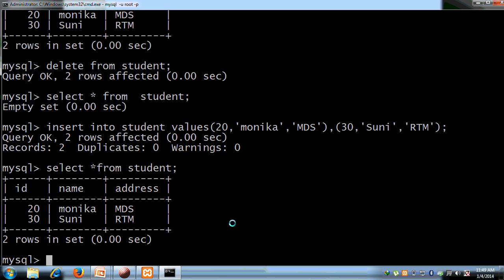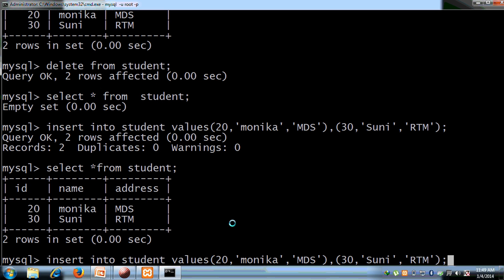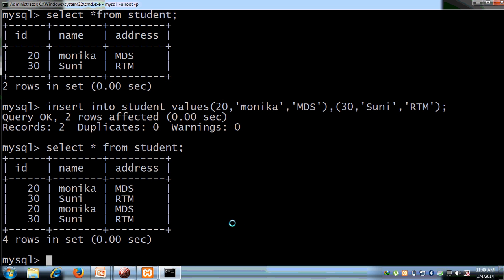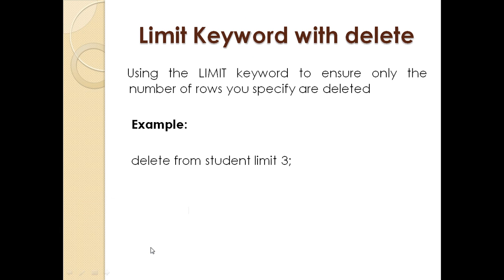We have two rows inserted again. Now let's see how we can use the LIMIT keyword with the DELETE command. Using the LIMIT keyword ensures that only the number of rows you specify are deleted. For example, specifying LIMIT 3 means only three rows will be deleted.